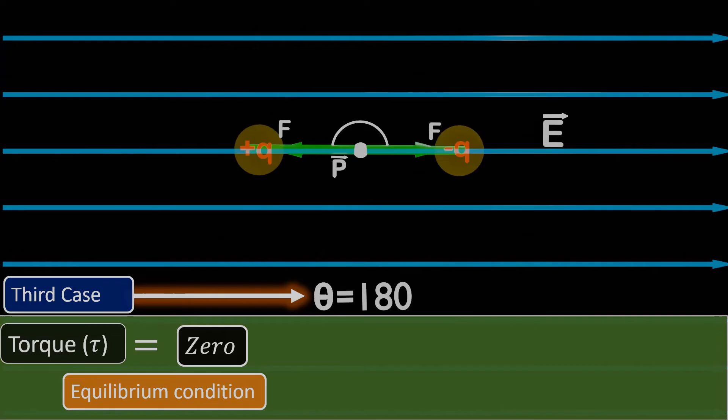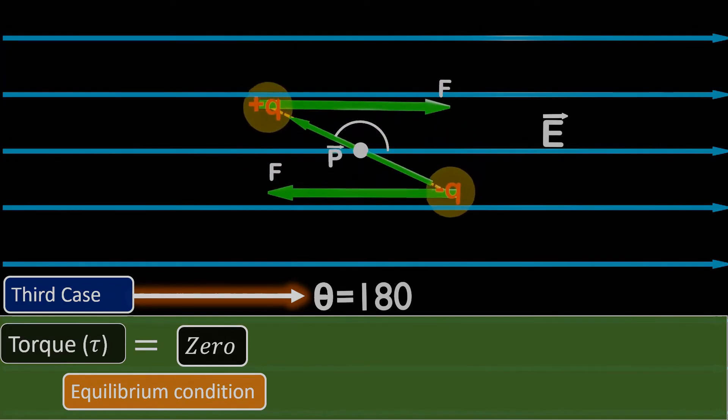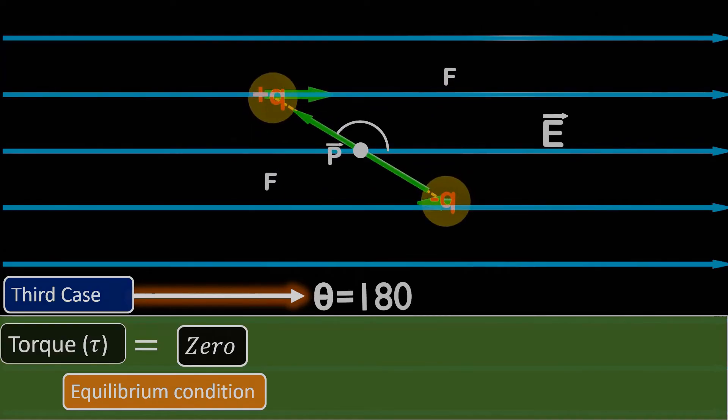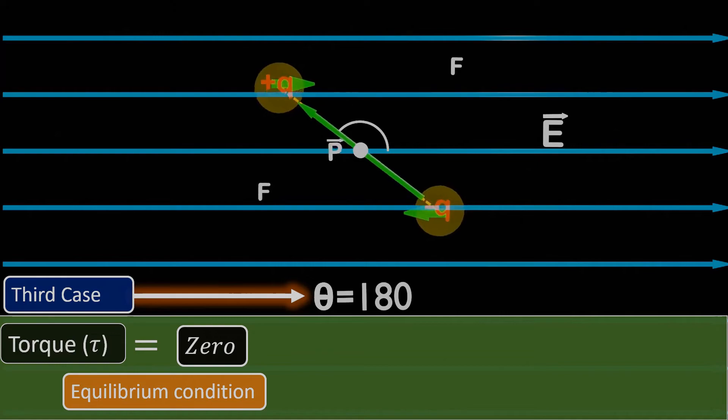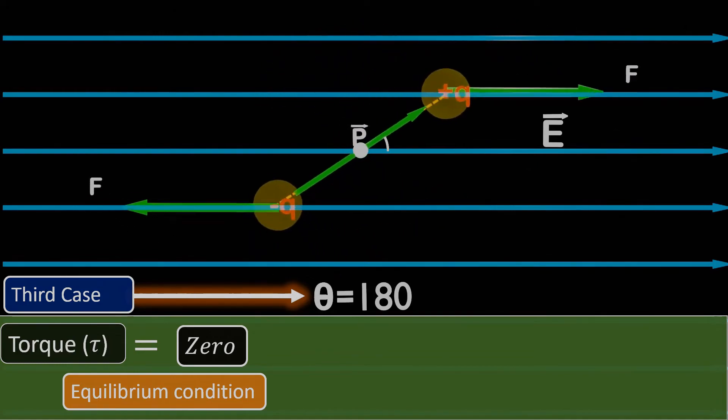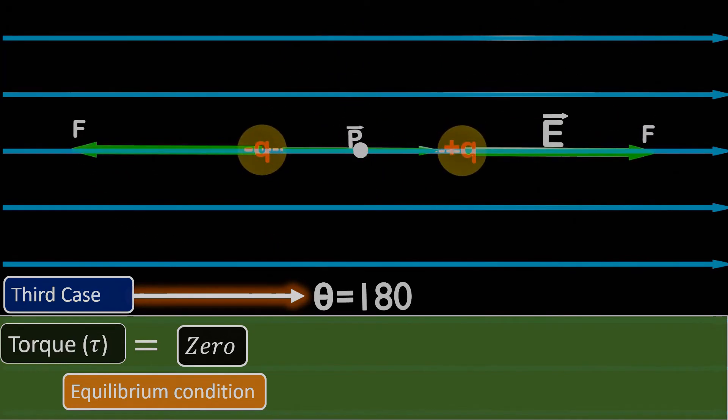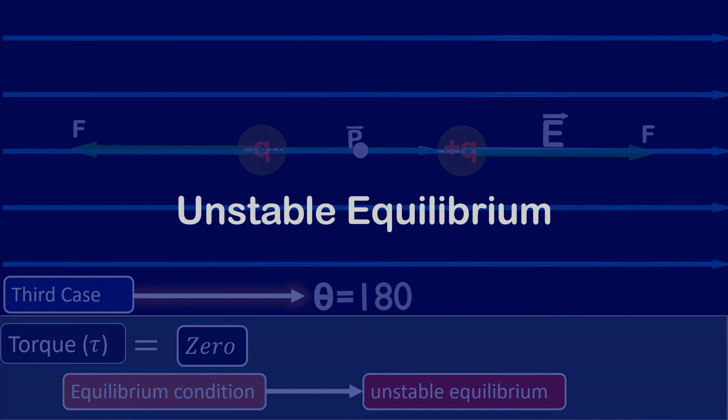But is this equilibrium stable? To understand this, let's give the dipole a slight rotation. As soon as we do that, a force will start acting on the positive end along the electric field towards right, while the negative end experiences a force towards the left. These forces create a torque on the dipole, aligning it with the direction of the electric field. This type of equilibrium, where the body doesn't return to its original position after a disturbance, is known as an unstable equilibrium. Thus, when the dipole is placed at an angle of 180 degrees with the electric field, it is in a state of unstable equilibrium.